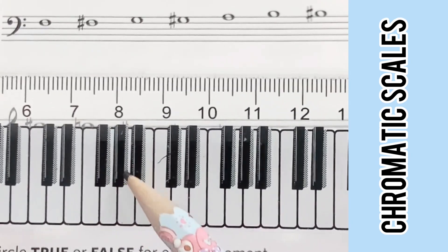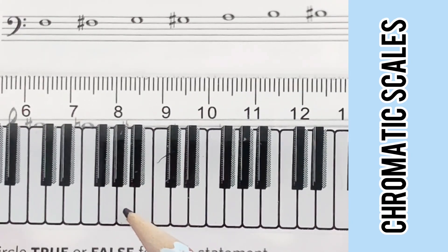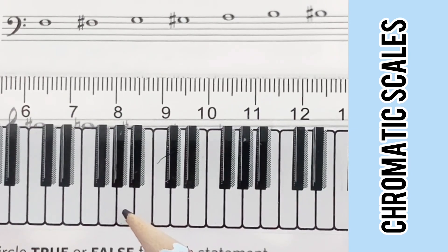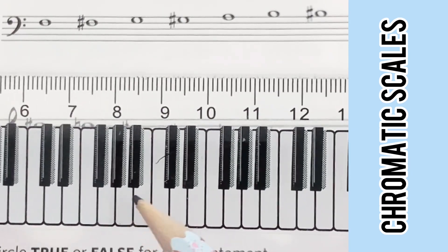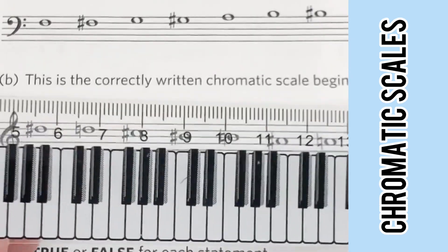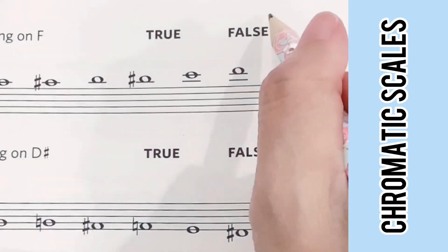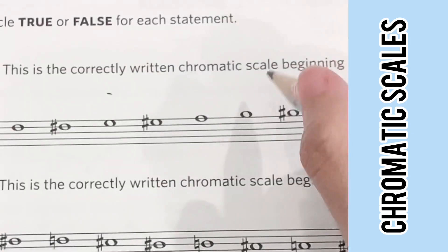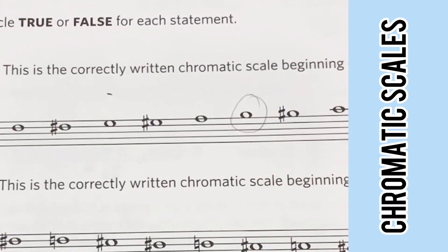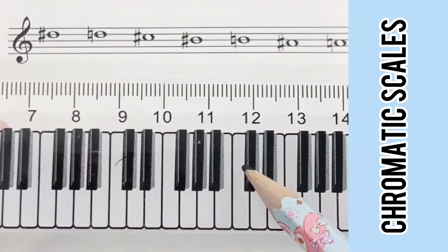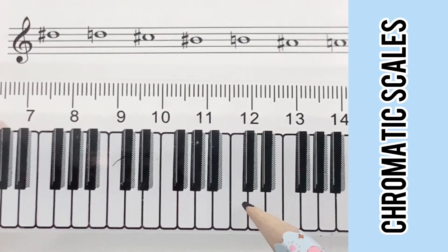And next it should be followed by B flat instead of B, so this is a wrong version of chromatic scale. You need a B flat here.